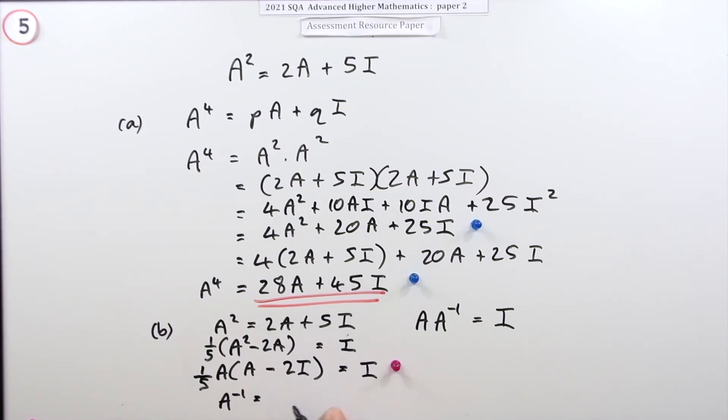Then comparing with this—A times, what, A times a fifth of that bracket—so the inverse of A must be a fifth of that. But you want it in the form, it was r and s, so it'll be a fifth of A minus two fifths of I.